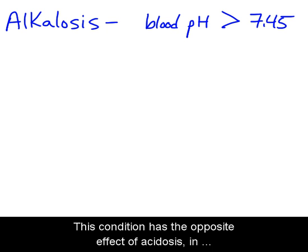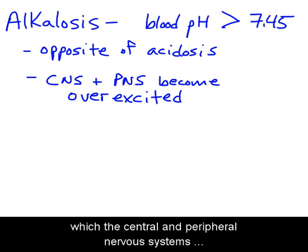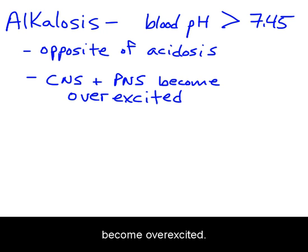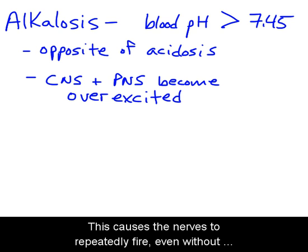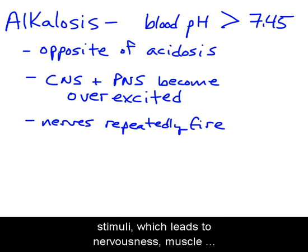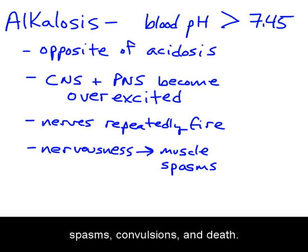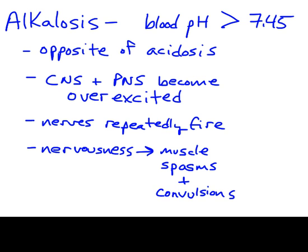If the pH of the blood increases above 7.45, a condition called alkalosis occurs. This condition has the opposite effect of acidosis, in which the central and peripheral nervous systems become overexcited. This causes the nerves to repeatedly fire even without stimuli, leading to nervousness, muscle spasms, convulsions, and death.